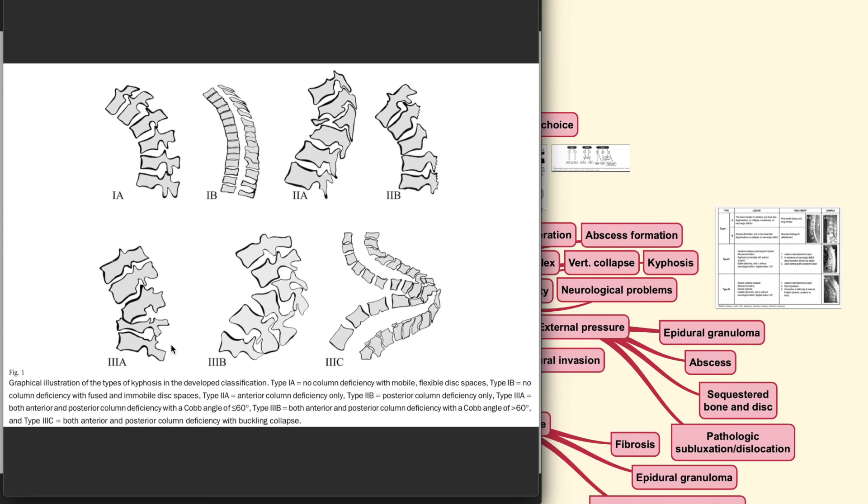For the type 3A, 3B and 3C, we could see multiple column deficiency. For the type 3A, there will be both anterior and posterior column deficiency but still with Cobb angle of less than 60. For the type 3B, there will be a Cobb angle of more than 60 and for the type 3C, there will be both anterior and posterior column deficiency with buckling type of collapse.